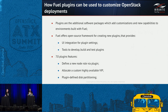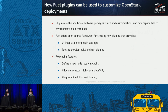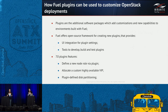Starting from Fuel 7.0, there are some new features in the plugin framework that helped us very much to build the Fuel Contrail plugin. The main feature for us was the ability to define a new node role via plugin — basically a new kind of server role deployed with Fuel. Another feature is the ability to locate a custom highly available VIP, which uses the same Fuel HA possibilities used for other OpenStack VIPs. The third feature, which was very useful for us, was plugin-defined disk partitioning. Using the plugin metadata, we can define a separate disk partition which can be used for the features that the plugin provides.